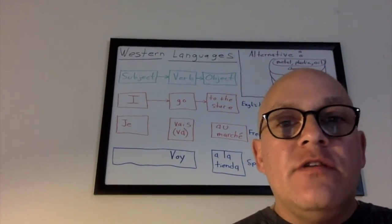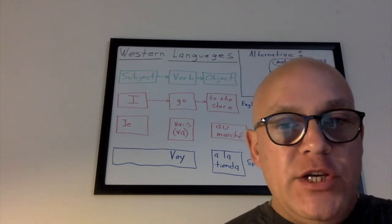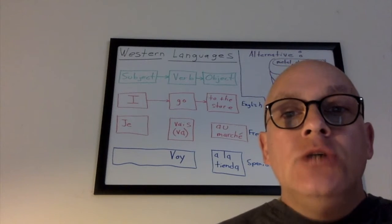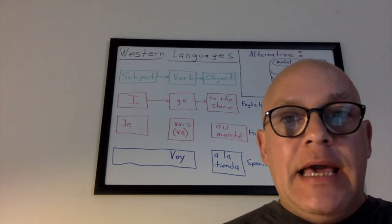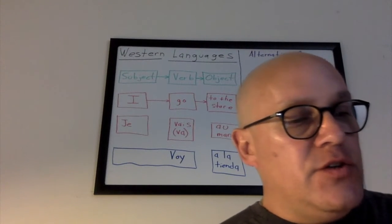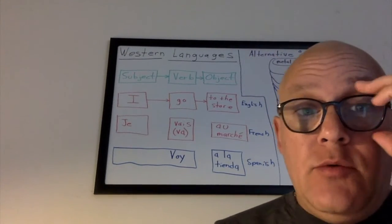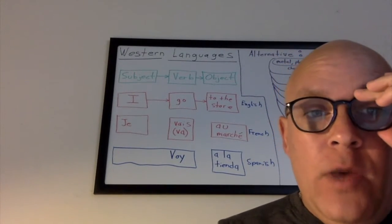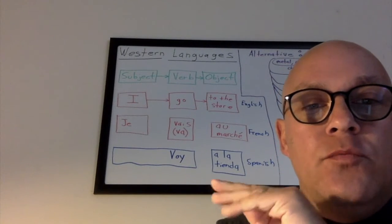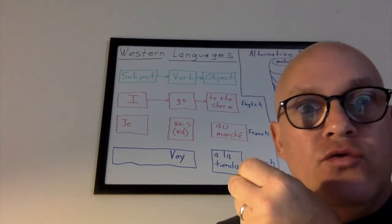Hey guys, this is Joe East here. This is a continuation of our discussion of artificial intelligence. Let's continue on the language concept, and once we get to the end of this you'll understand where I'm headed. Let's consider Western languages, the way they're structured in general and how we have to put in certain things for exceptions to these rules.